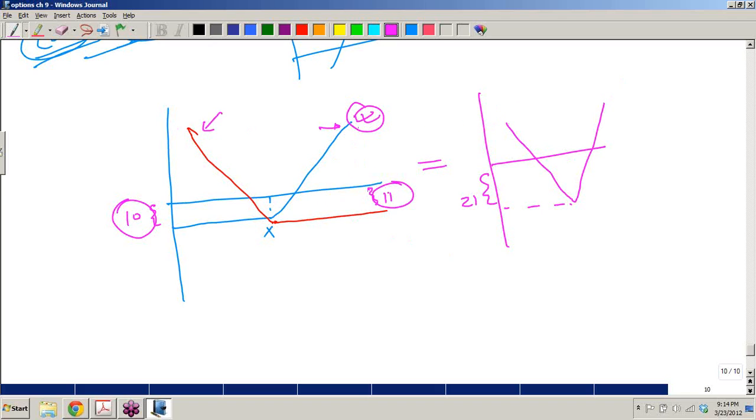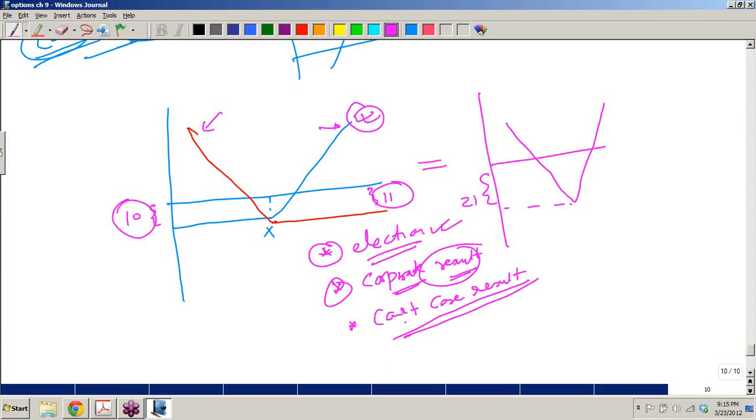So this is a strategy when you expect market to go either side. Most appropriate time would be election time, when you are expecting election results, not the Vidhan Sabha election, but Lok Sabha elections. You can use this strategy because during that time, the market movements are to either side. Or if the company is expecting some corporate result, not much corporate result, but when some court case result is coming out against the company. You can adopt this type of strategy.